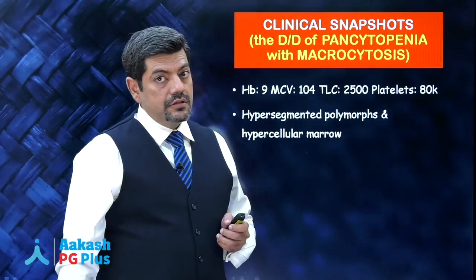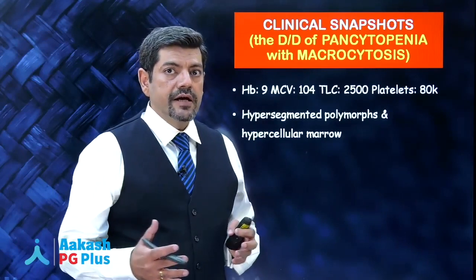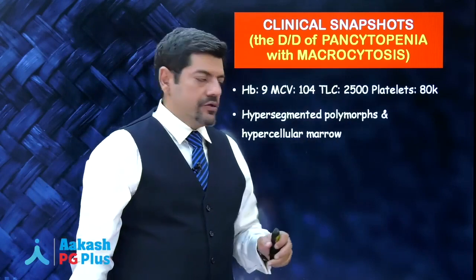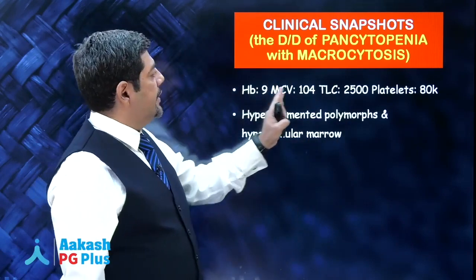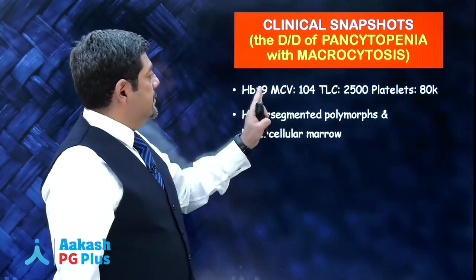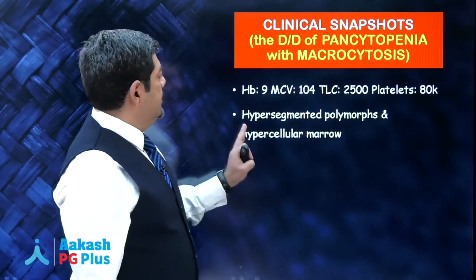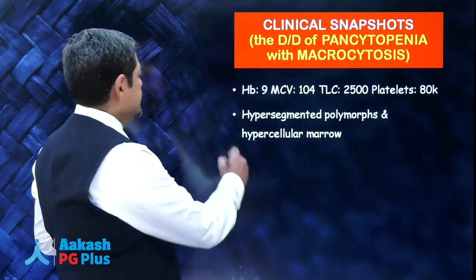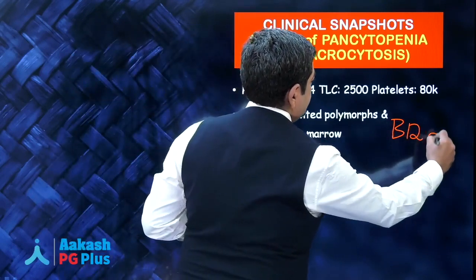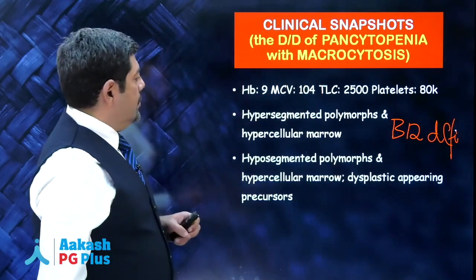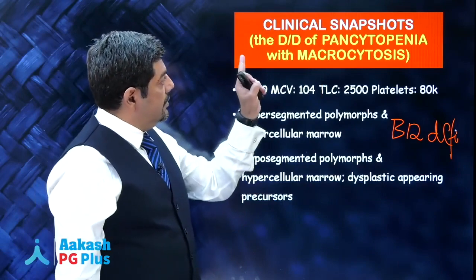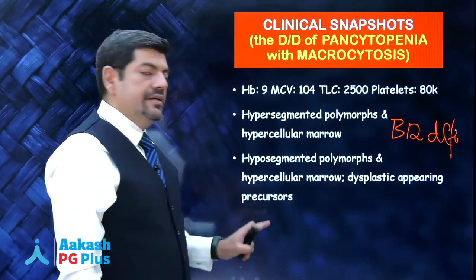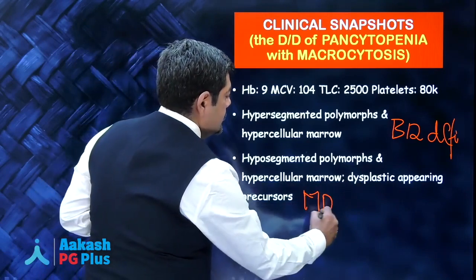Your MCQ exam is all about differential diagnosis — they give you a snapshot and expect you to give a diagnosis. What is the differential diagnosis of pancytopenia with macrocytosis? For example, hemoglobin of 9, TLC of 2500, platelets of 80,000, and MCV of 104 — that is macrocytic pancytopenia. With this picture alone, you are dealing with B12 deficiency. But when you also have hyposegmented polymorphs, hypercellular marrow, and dysplastic-appearing precursors, you are dealing with myelodysplastic syndrome.